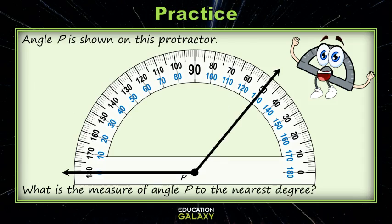Let's try one that's pointing in the opposite direction. Angle p is shown on this protractor. What is the measure of angle p to the nearest degree? Step one, place the protractor center on the vertex and line up on the protractor. Check.